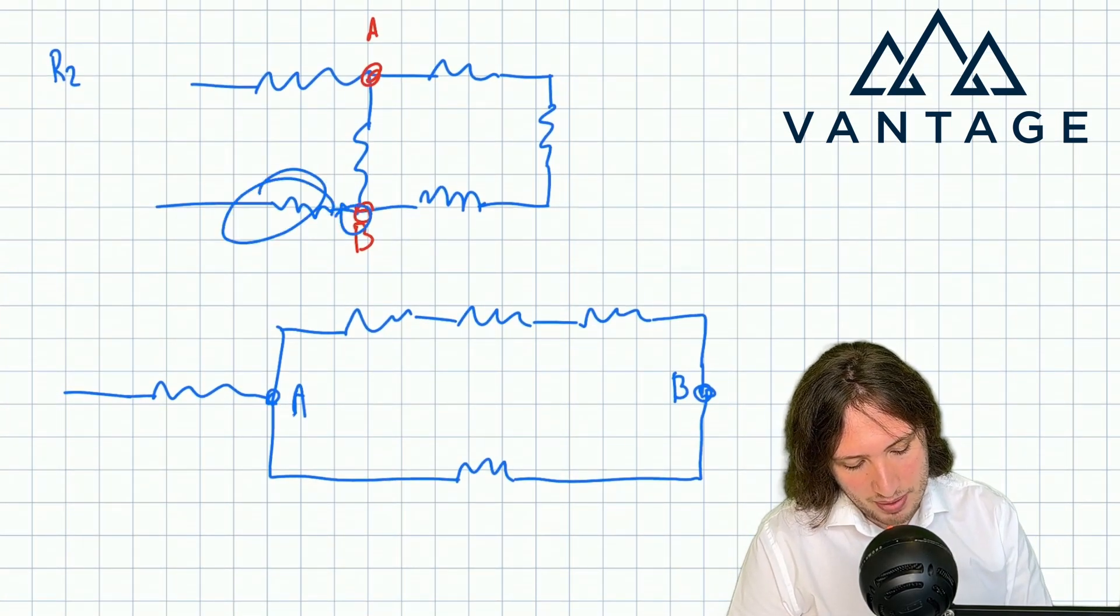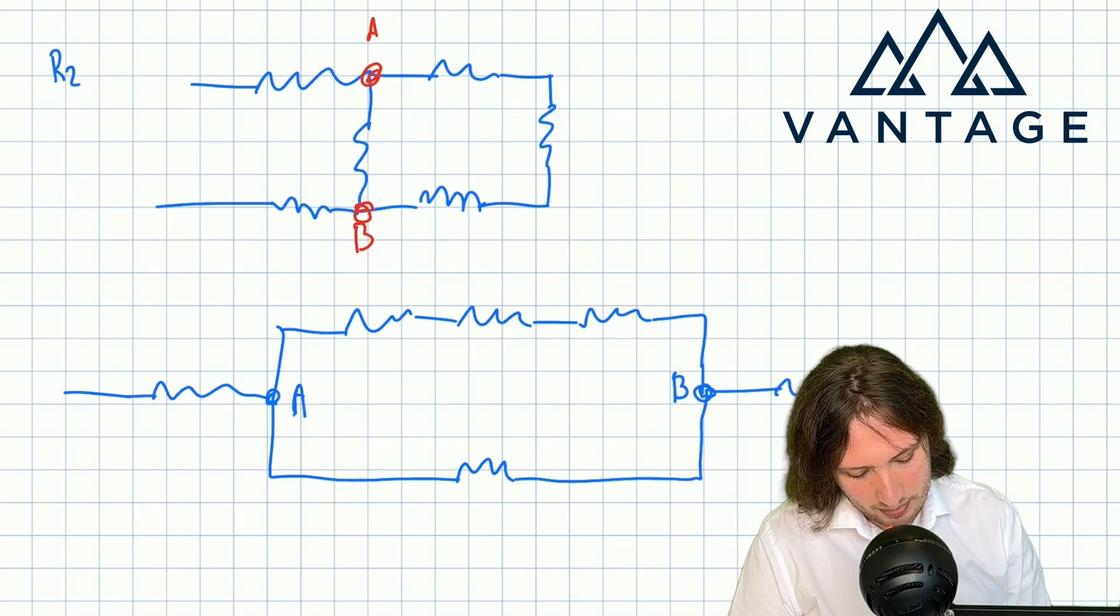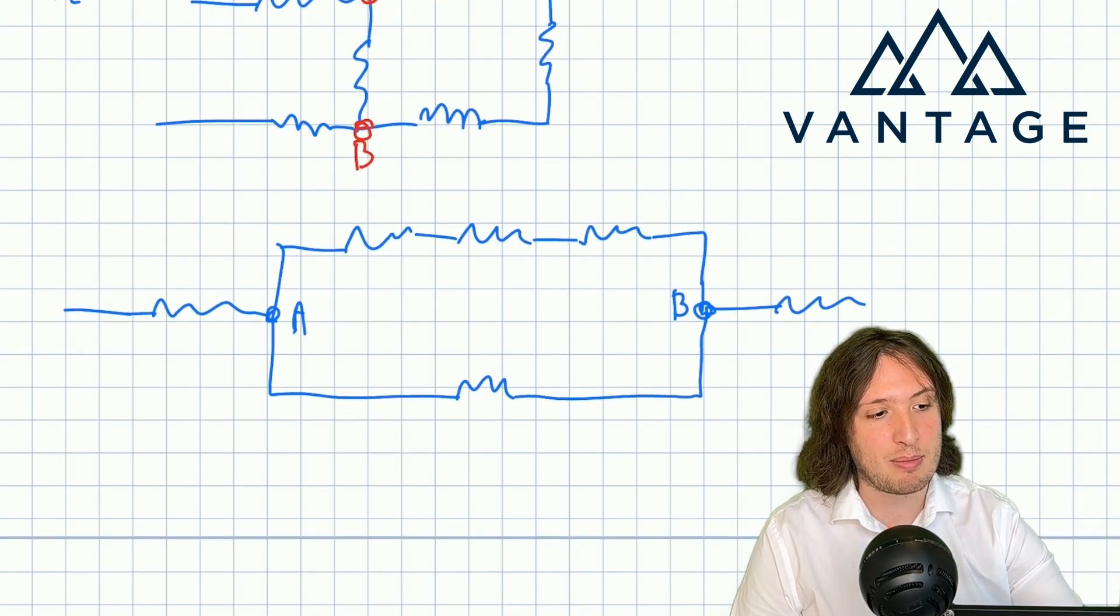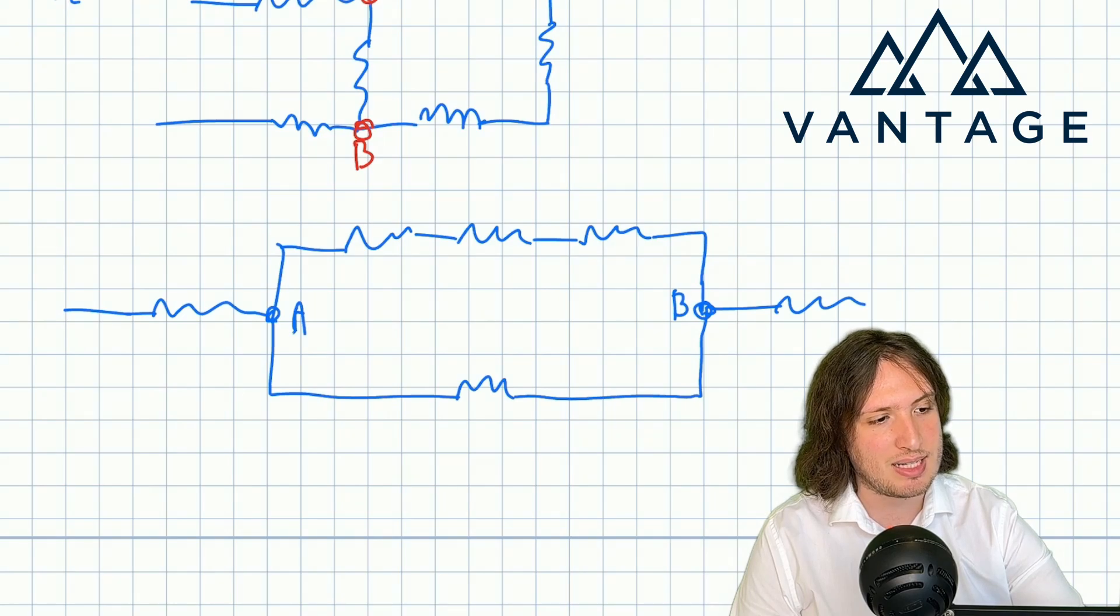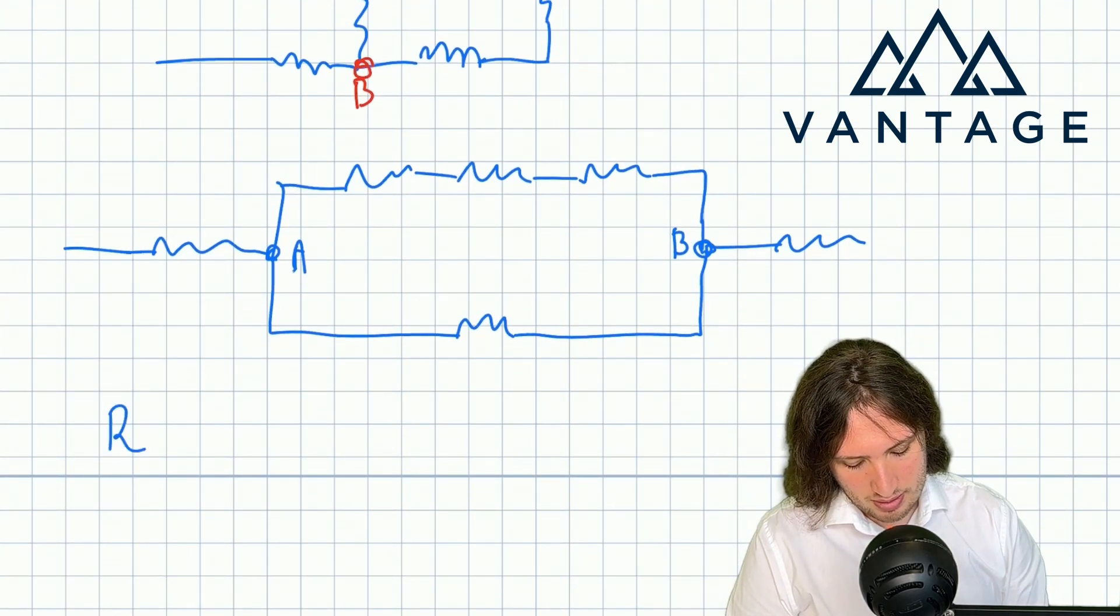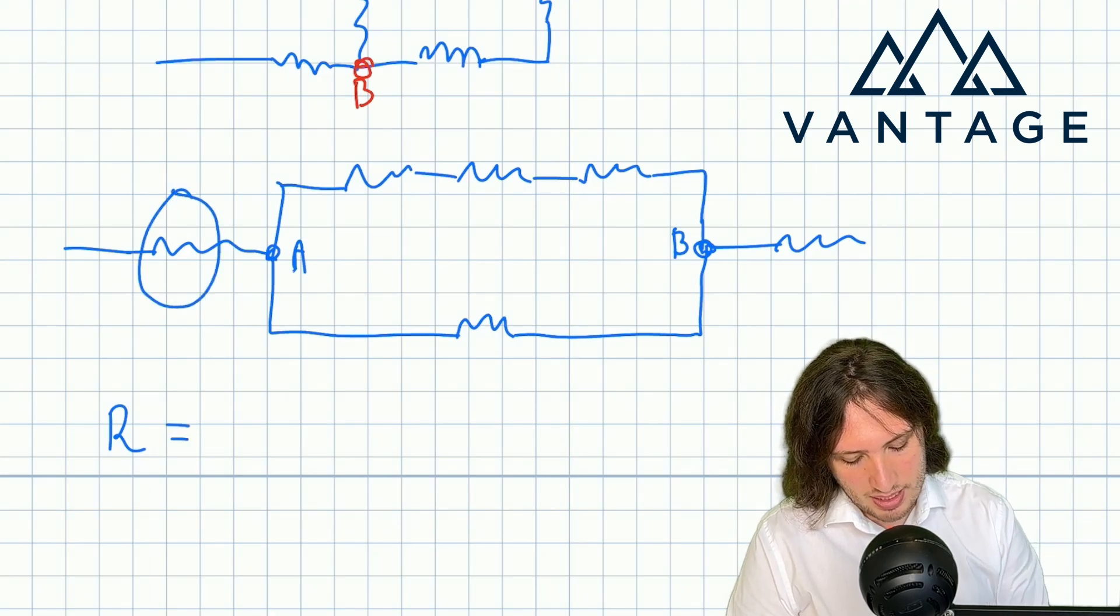And then after B flowing out I've got one more. Okay, so we should now be able to think about the effective resistance of this setup without too much trouble. So what have I got? Well I've got this thing.